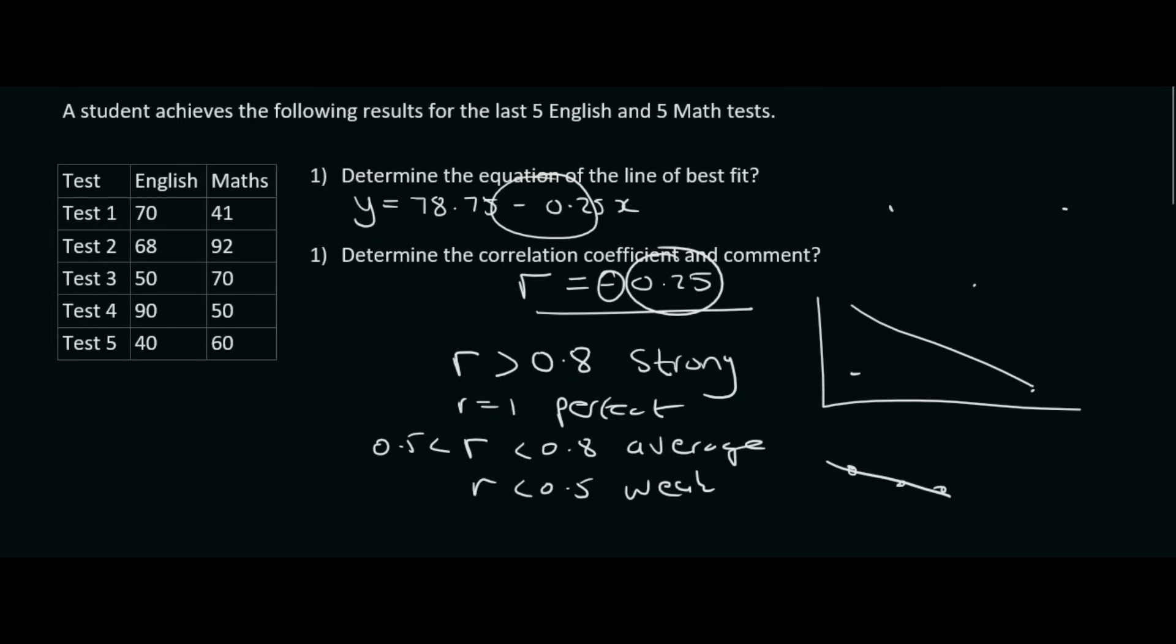So we can say that the correlation is weak. What that means is that this student, there isn't a correlation between their English marks and their maths marks. So for example, if they get 95% for their English, there's not a, it doesn't mean that they're going to do well in their maths. They might, but statistically, there's no relationship between their English and their maths.